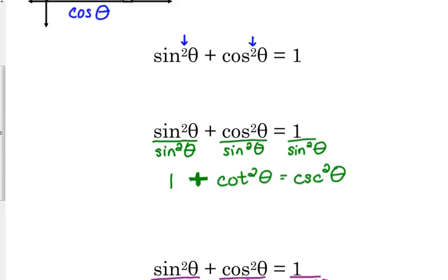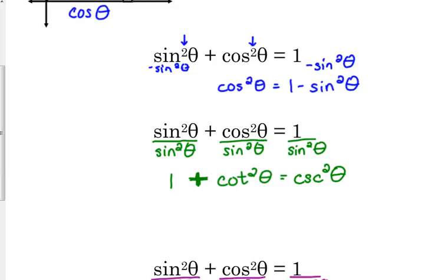I said there were nine versions, and this is only three. You can manipulate these equations just by moving things from side to side. With the original — sine squared plus cosine squared equals one — I can subtract sine squared from both sides and get cosine squared of theta equals one minus sine squared of theta. That's version four. I can do the same thing by subtracting cosine squared to get sine squared of theta equals one minus cosine squared of theta. That's version five. I'm showing you where these come from so you don't have to memorize nine different versions.